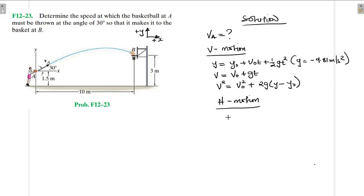For horizontal motion, acceleration is equal to 0. So we have x equal to x-initial plus v-initial-x times t. Please differentiate these v-initials — they are not the same. This is v-initial in the y direction, and this is v-initial in the x direction. For horizontal motion, the acceleration component is equal to 0.